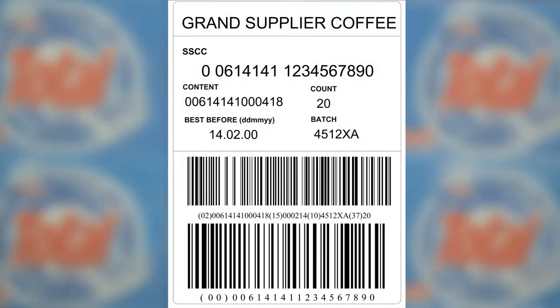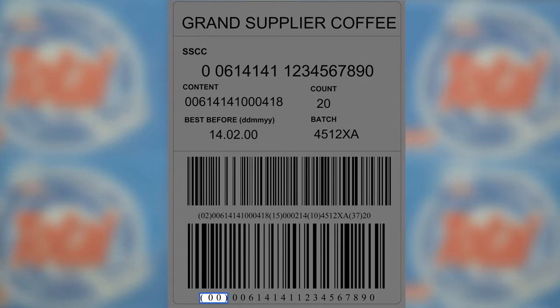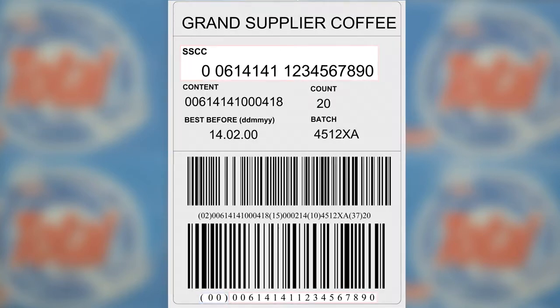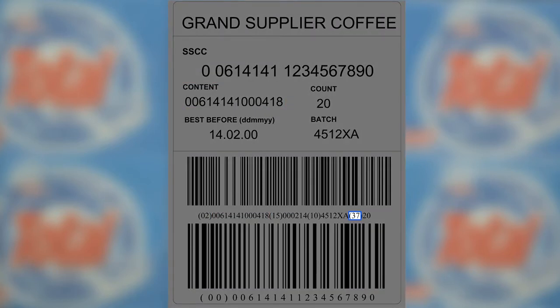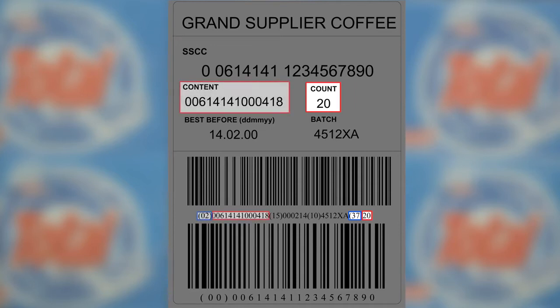Because the GS1-128 barcode symbology has alphanumeric capability, it is ideal to encode data on the GS1 logistic label. The data carried by GS1-128 symbols must be structured using GS1 application identifiers, or AIs, which are in brackets. The AI00 defines that the next 18 digits is the SSCC. The AI02 defines that the following 14 digits is the global trade item number, or GTIN, of the trade items contained on the pallet. The AI37 defines the quantity of trade items contained on the logistic unit, has a maximum of 8 digits and is always used in combination with AI02.